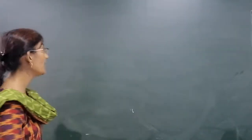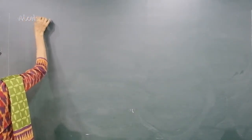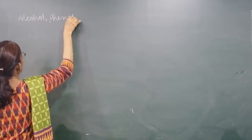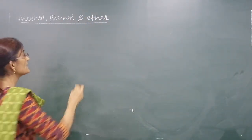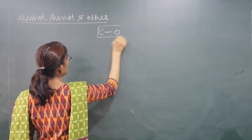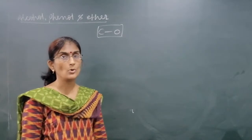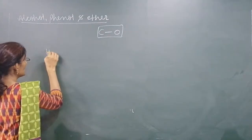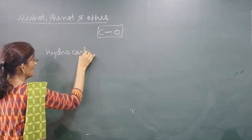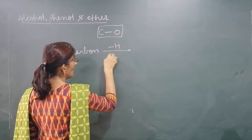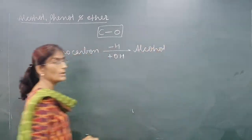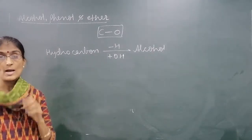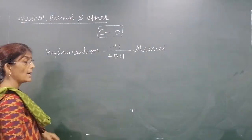Hello students, today we are starting with a new chapter: Alcohol, Phenol and Ether. In all these three compounds, there is a single bond between Carbon and Oxygen. Alcohol is obtained by replacing the Hydrogen of a Hydrocarbon with a Hydroxyl group, which is called the Hydroxyl group.